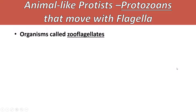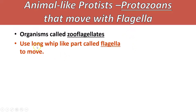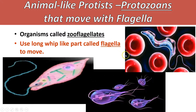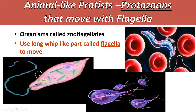Another kind of protozoan are ones that move with flagella. A flagella is similar to a cilia in that it's the same kind of protein structure, like a hair, except it's a lot longer in comparison to the size of the organism. These organisms that are flagellates we call zooflagellates - 'zo' meaning animal-like, they are protozoans that move using a flagella. In these pictures you can notice these long whip-like structures are definitely much longer than the cilia we saw around the paramecium.